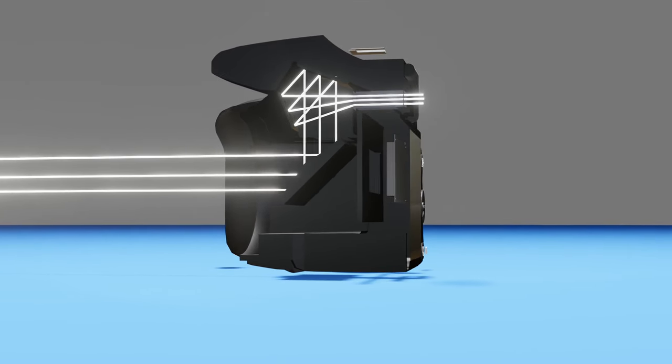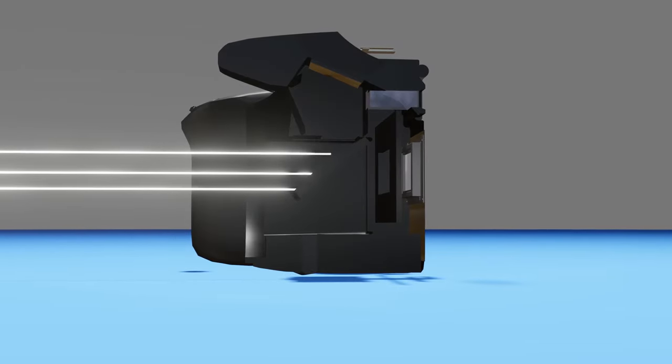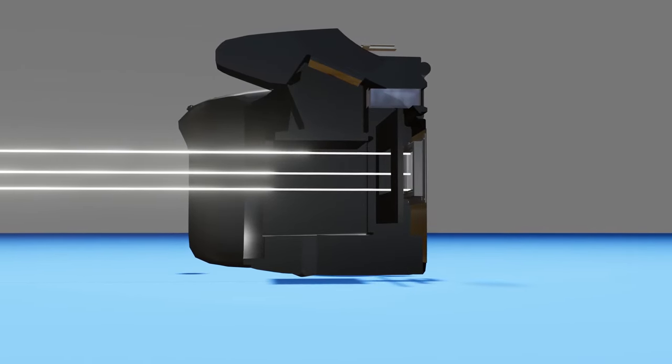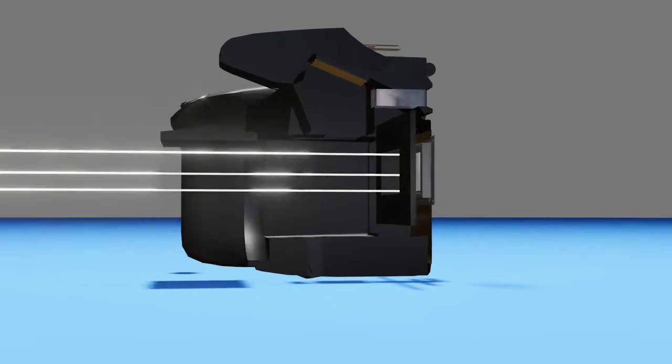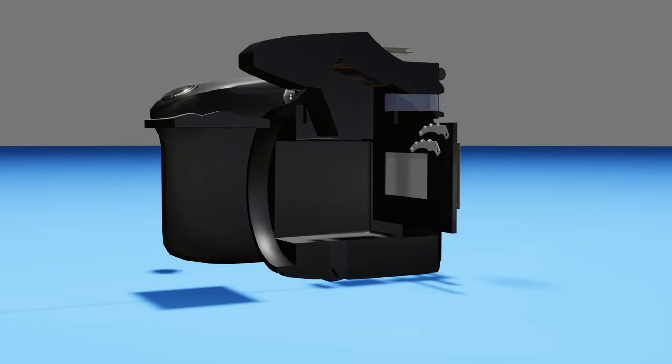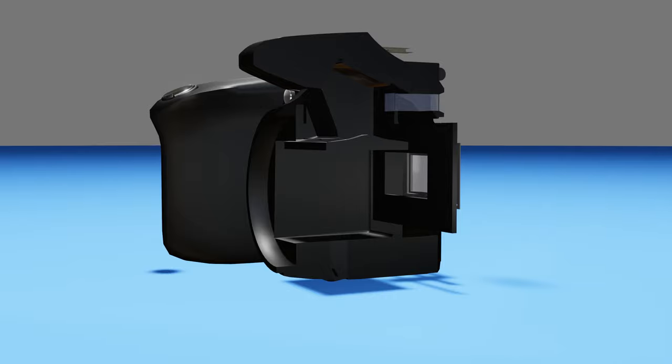If we begin the sequence of taking a photo, the mirror flips up and no longer reflects the light rays. The light rays then hit the shutter box. The shutter box is made up of two curtains, each made up of multiple leaves. When a photo is being taken, the lower curtain drops, letting light through to the sensor.